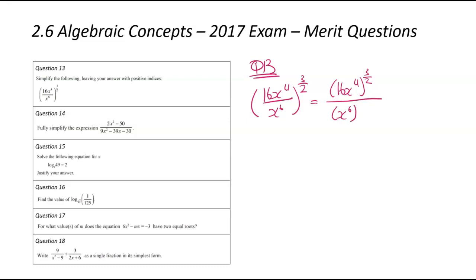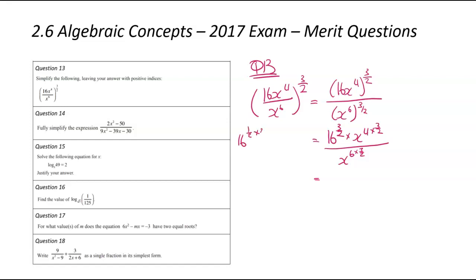And then down the bottom, same thing: x to the power of 6 divided by 3 over 2. I'm now going to expand those brackets. So that's 16 to the power of 3 over 2 times x to the power of 4 times 3 over 2 — the power is being multiplied. Then that's divided by x to the power of 6 times 3 over 2. Looking at 16 to the power of 3 over 2: that's 16 to the power of 1 half times 3, which is the square root of 16, all of that cubed. The square root of 16 is 4, so that's 4 cubed, which comes to 64.